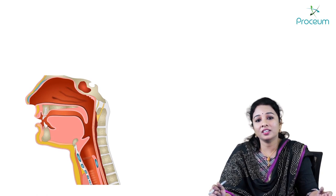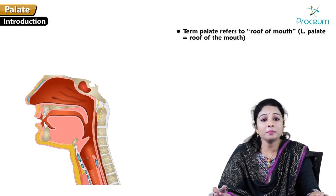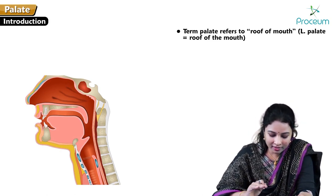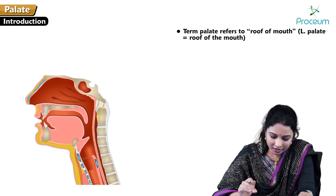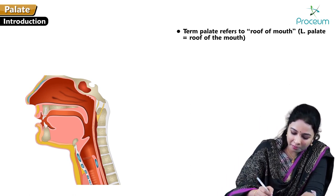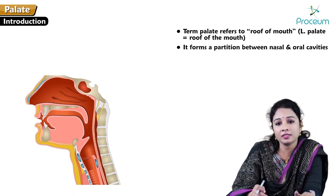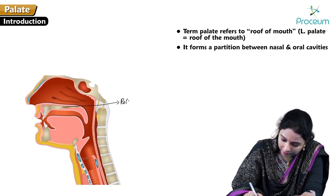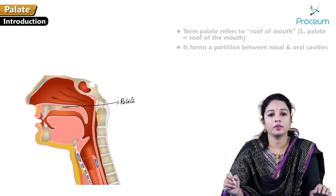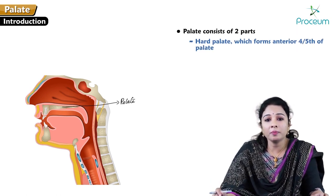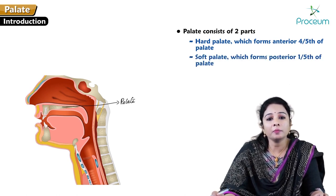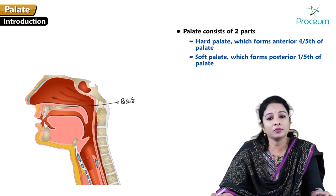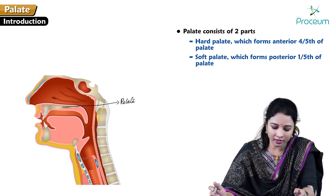Hello students. Today we are going to learn about the palate. The term palate refers to the roof of the mouth. Here is a schematic sagittal view of the head and neck region where we can appreciate the palate, which acts as a partition between the nasal and oral cavities. The palate consists of two parts: the hard palate, which forms the anterior four-fifths, and the soft palate, which forms the posterior one-fifth.